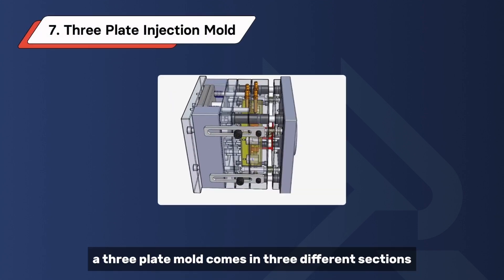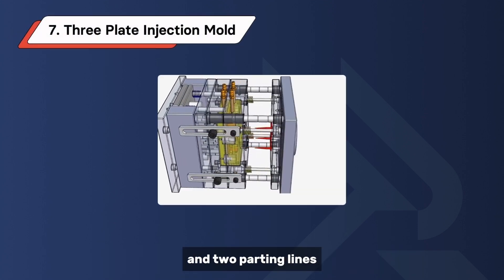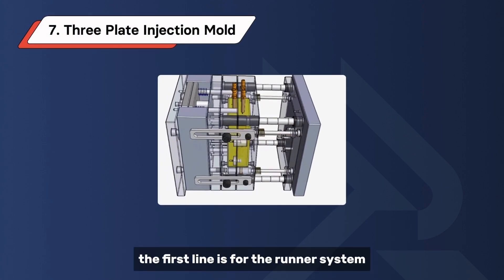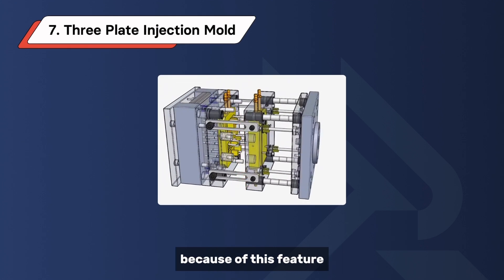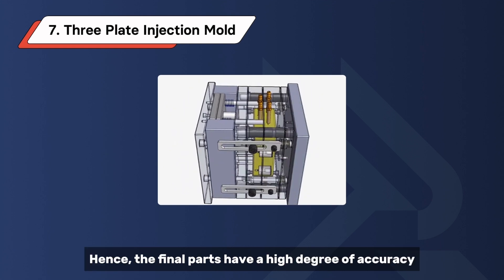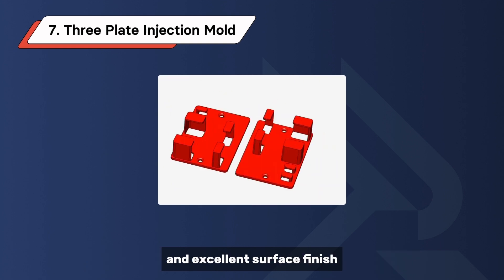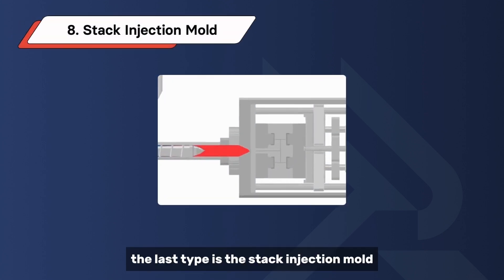A three-plate mold comes in three different sections and two parting lines. The first line is for the runner system, while the other is for the molded part. Because of this feature, machinists can degate automatically. Hence, the final parts have a high degree of accuracy and excellent surface finish.